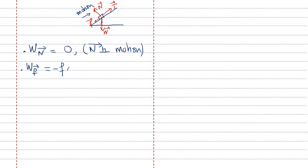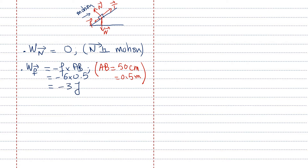Second, the work of friction equals minus F times the distance AB, which is minus 6 times AB. AB is given as 50 centimeters, which is 0.5 meters. So the work of friction equals minus 3 joules. Any time we get a negative answer, we note: work of friction is resistive, that's why it's negative.